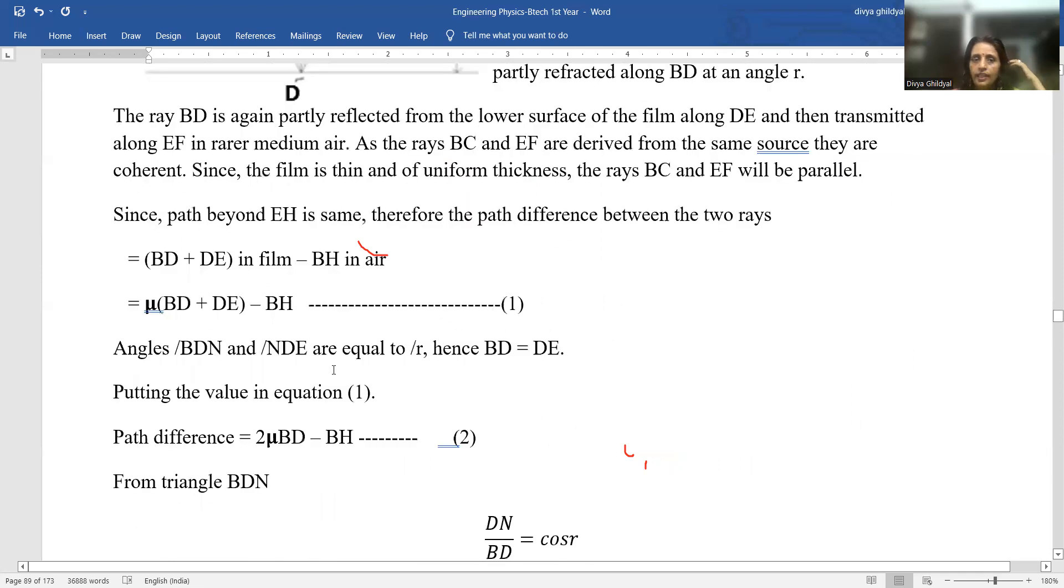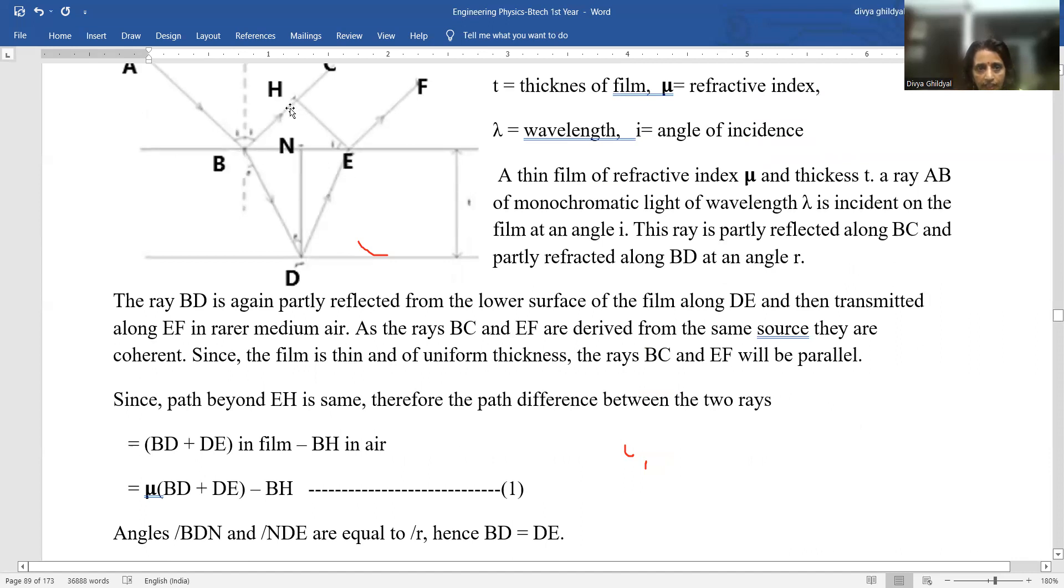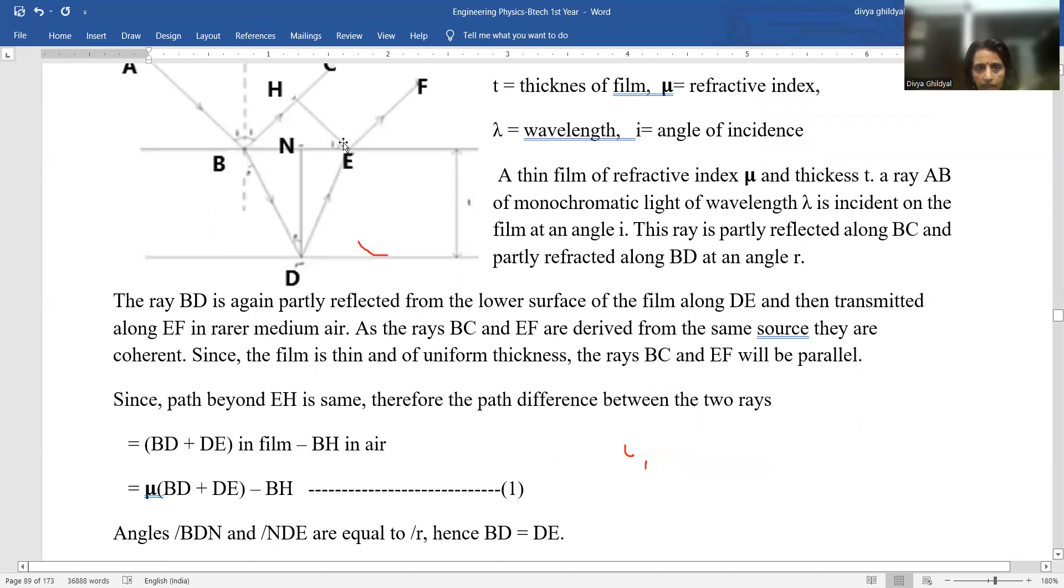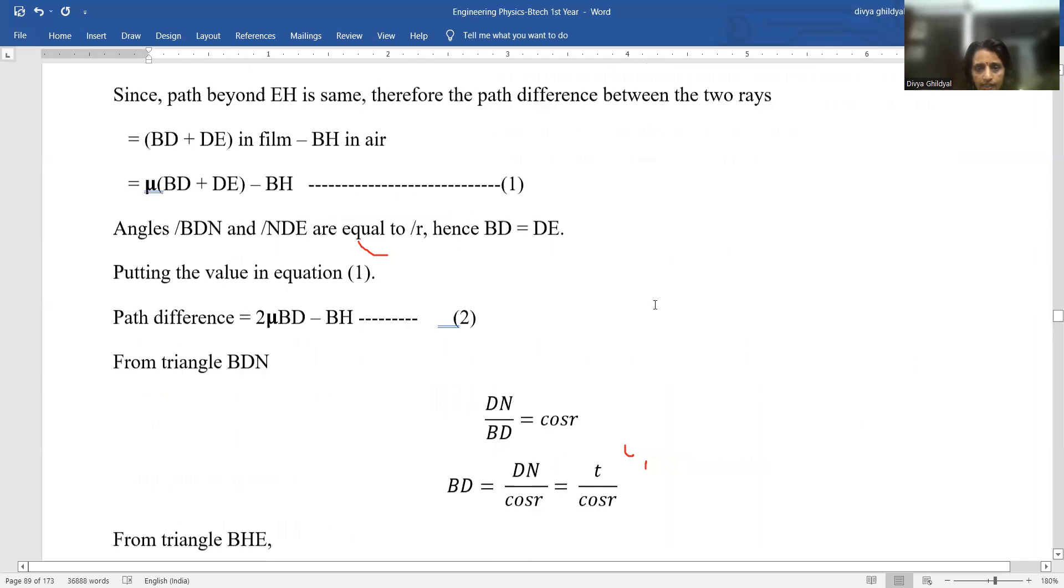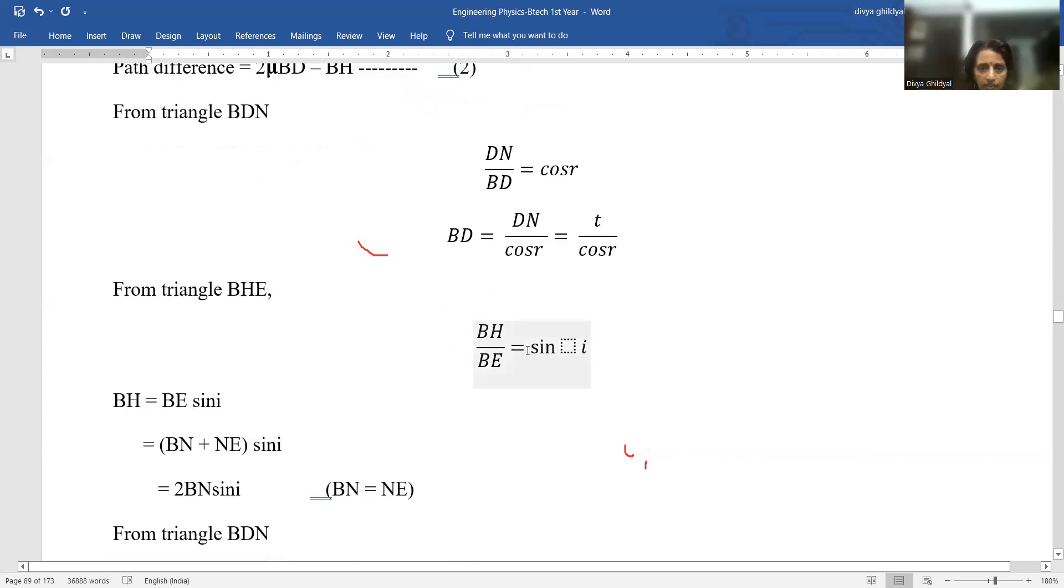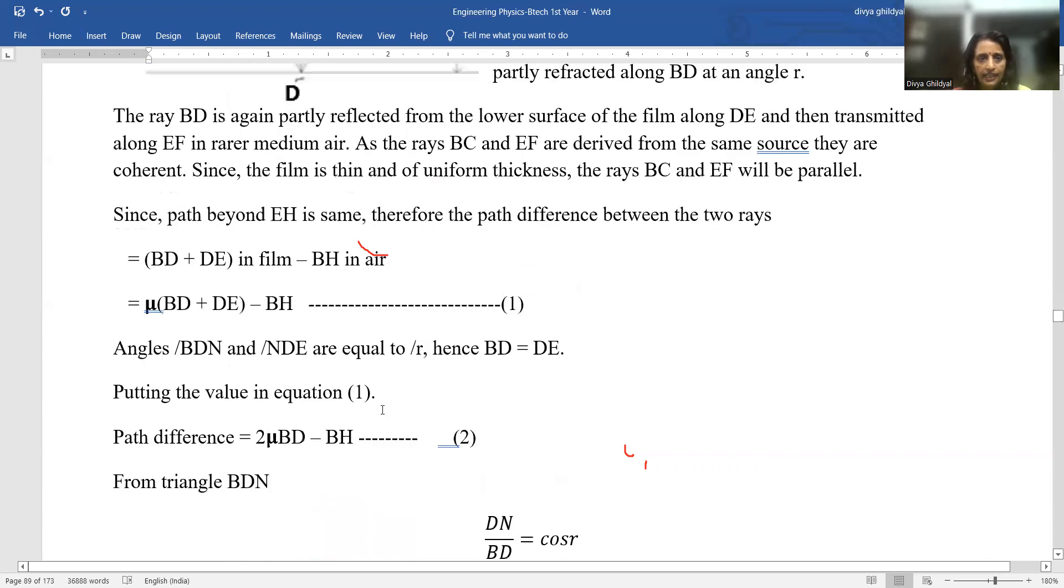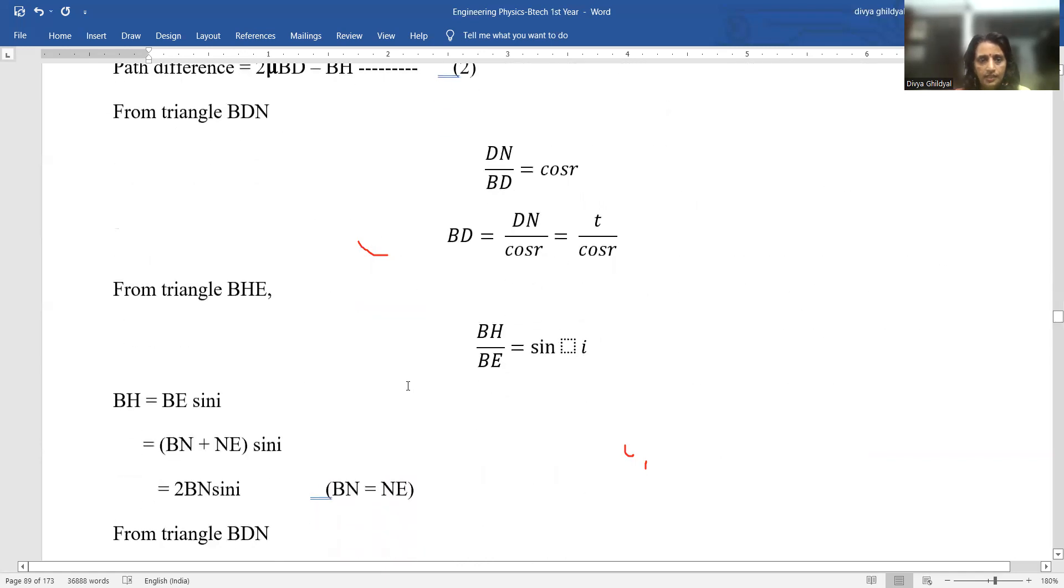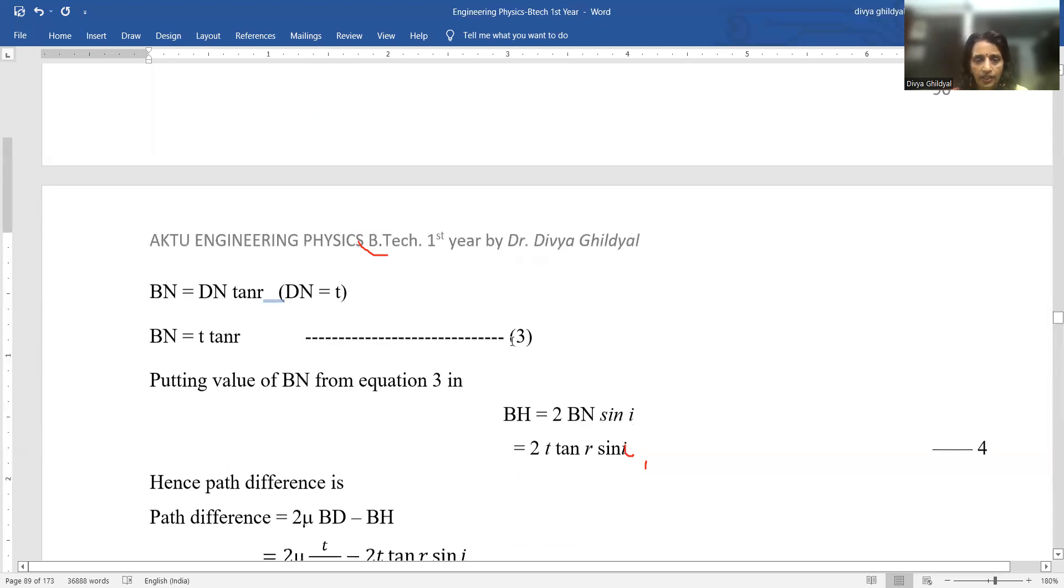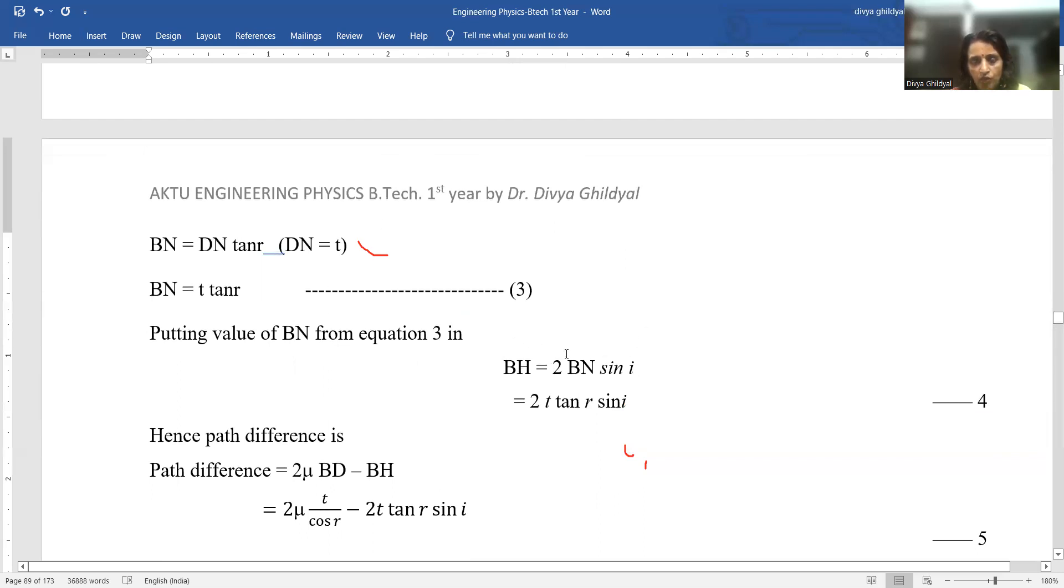Similarly, from triangle BHE, this angle sine I. What is the formula? Perpendicular upon hypotenuse. So sine I becomes equal to BH upon BE. So BH is equal to BE sine I. BE is BN plus NE. So this becomes equal to BN plus NE into sine I. And BN plus NE from similar triangles becomes equal. So it becomes 2BN sine I. Again from triangle BDN, we get tan R is equal to BN upon DN. Putting all these values in the equation for path difference, we get equal to 2T tan R sine I.